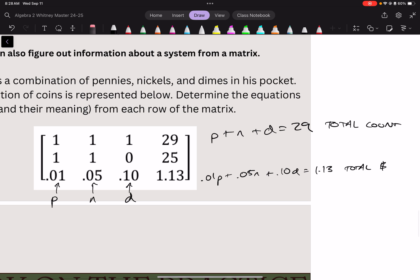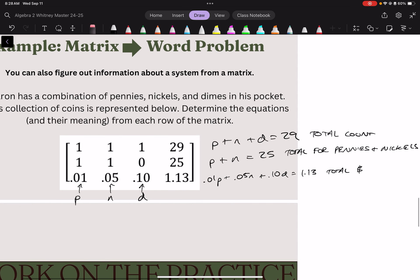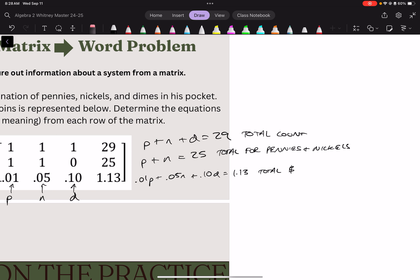Finally, we have 1 penny plus 1 nickel equals 25. What this tells me is the total for pennies and nickels. Since this doesn't tell me anything about dimes, it also kind of inversely tells me, given that we have 29 total and 25 without dimes, it tells me that we have 4 dimes.